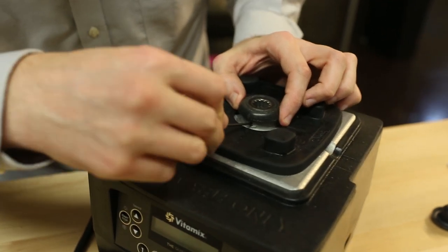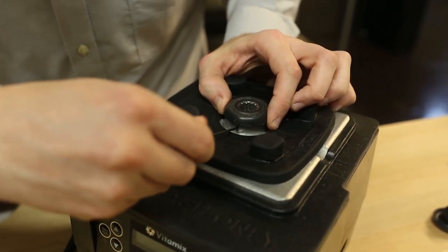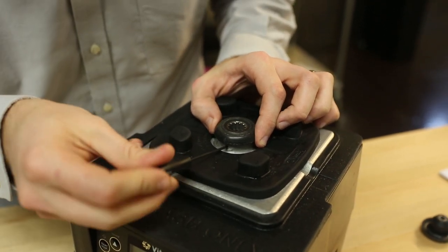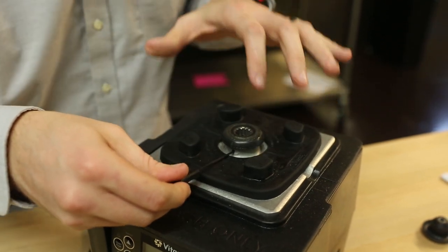So I'm going to stick my hex wrench in here at an angle, like a 45-degree angle, and you kind of have to feel it out. It'll kind of click in place a little to make sure that you got into the inset.